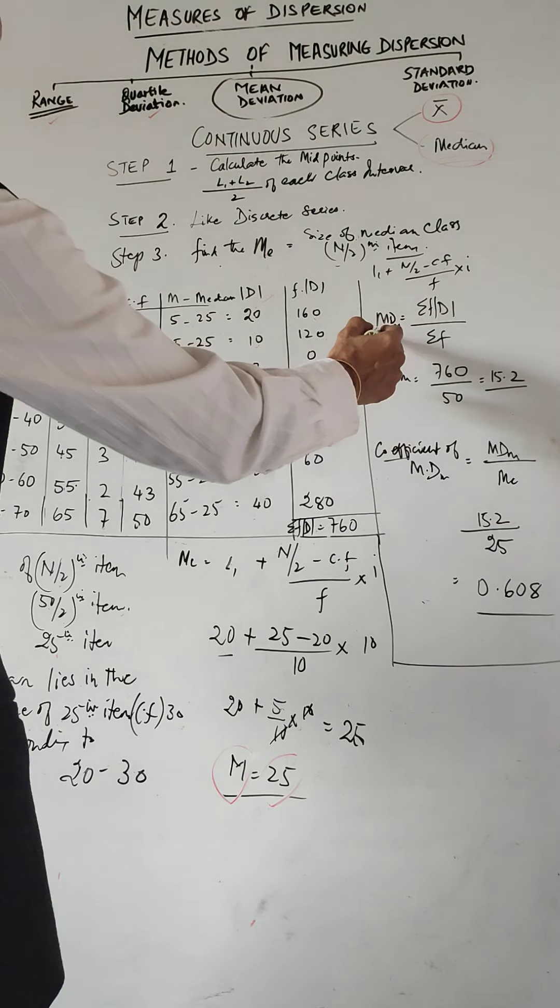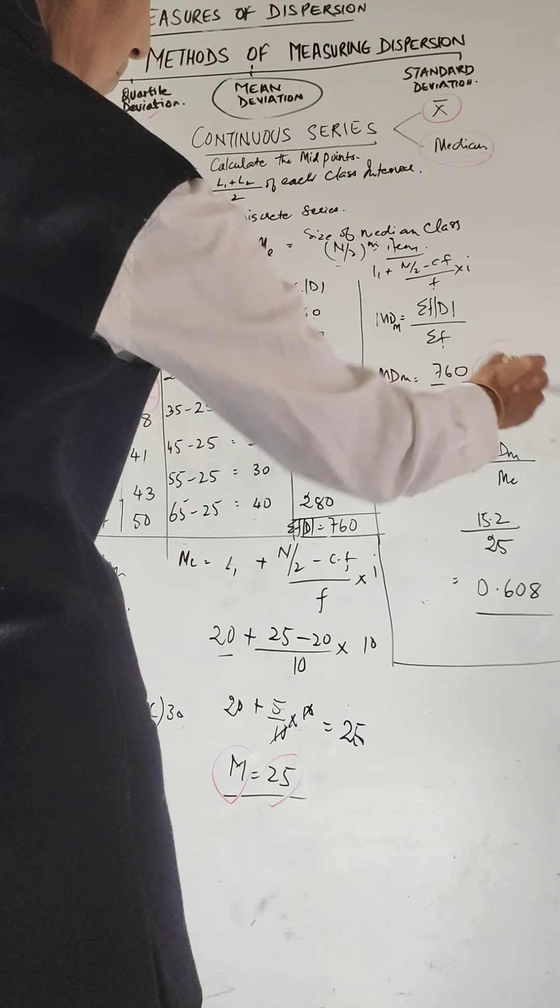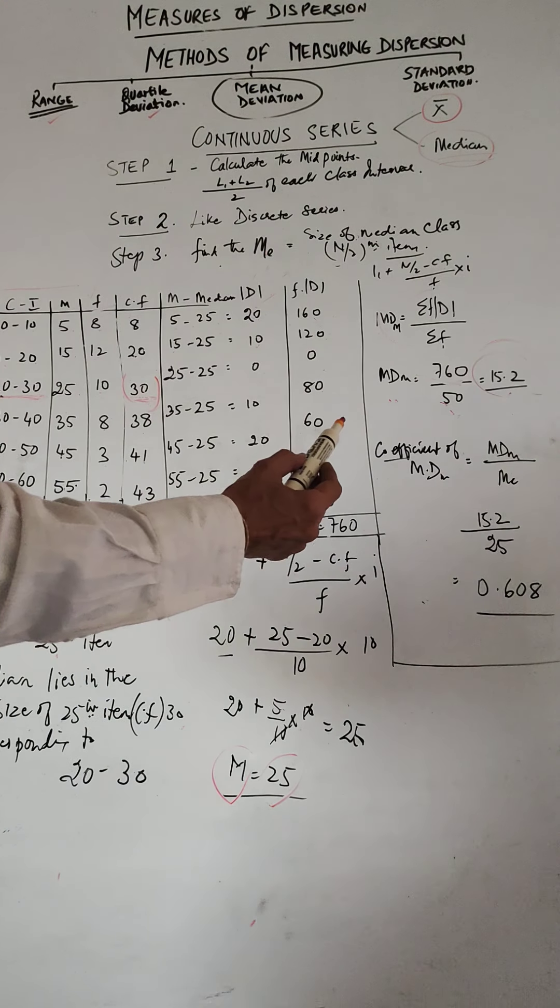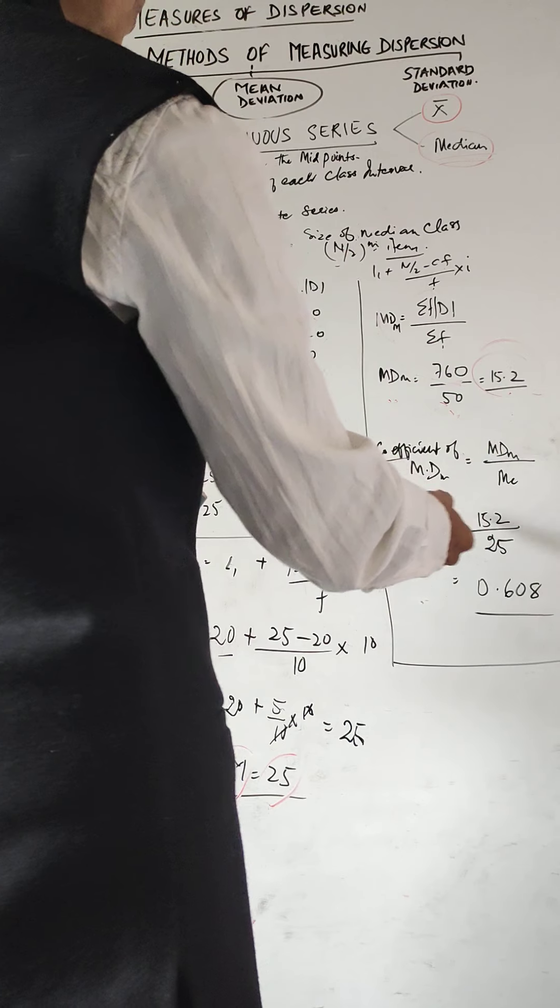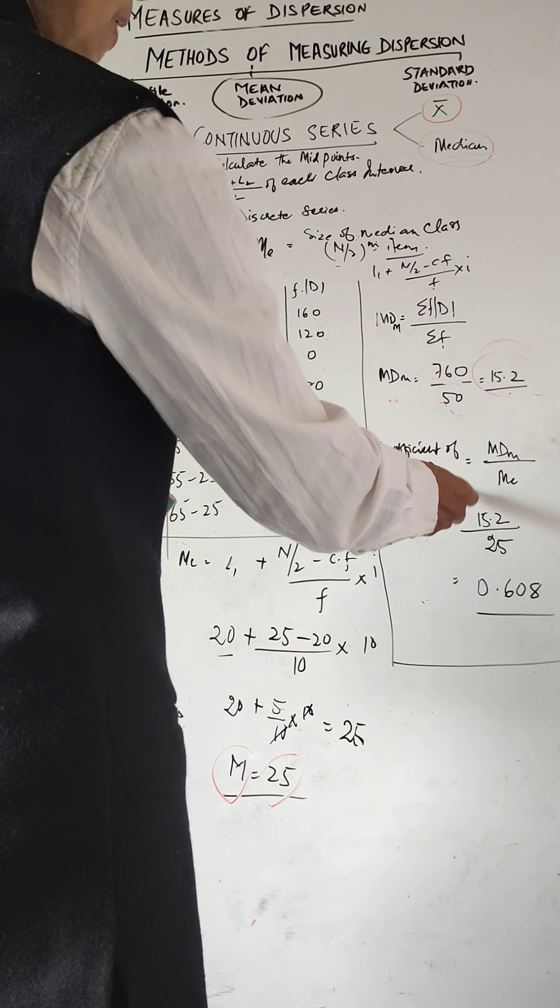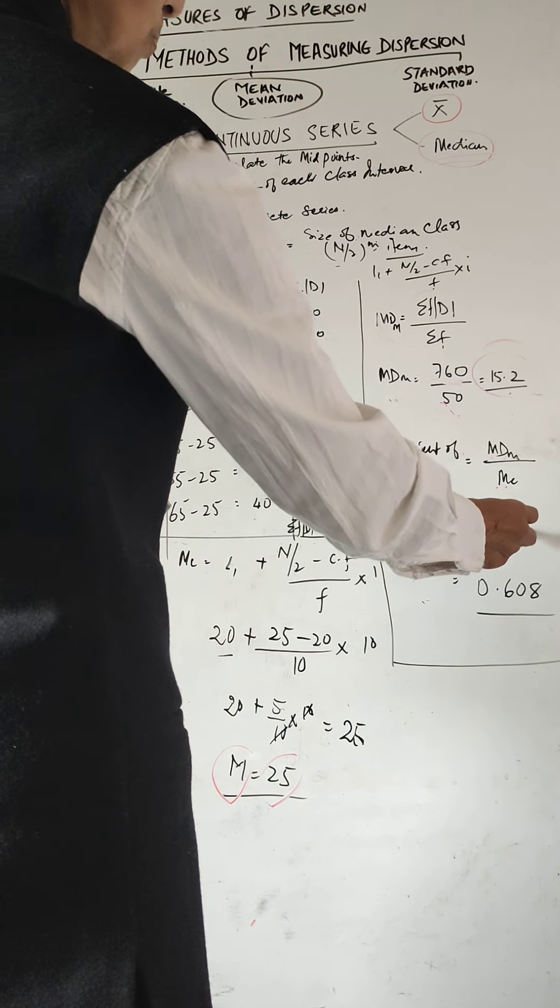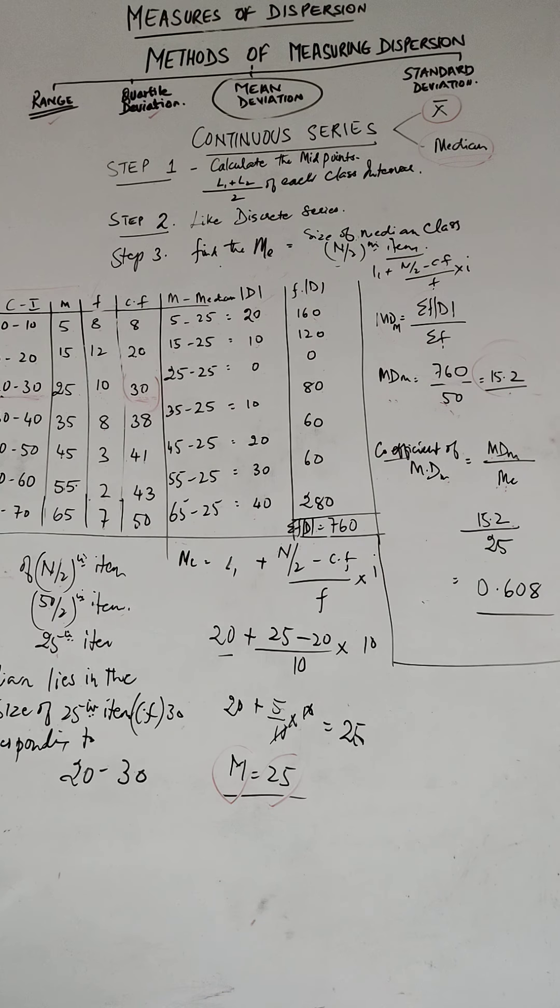So mean deviation by median is equal to Sigma F D upon F. So just write down the values here: 760 upon 50 is equal to 15.2. So that is the mean deviation from median. Now we are interested in finding out the coefficient. Sometimes you get a question as what is the coefficient of mean deviation. So coefficient of mean deviation by median is mean deviation from median divided by the median. So 15.2 divided by 25, what you get is 0.608.